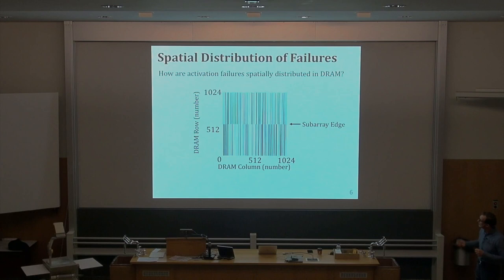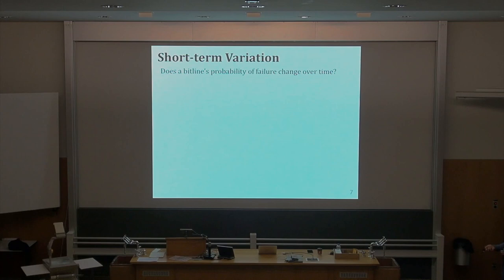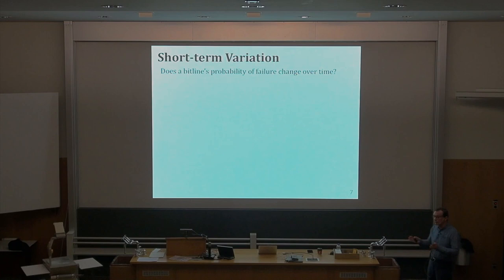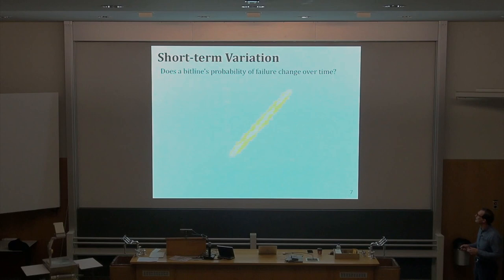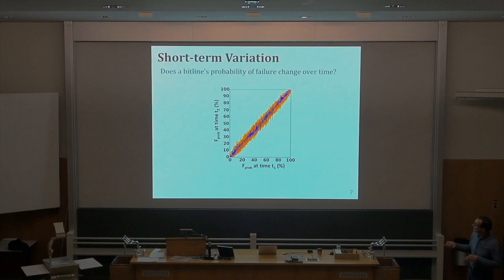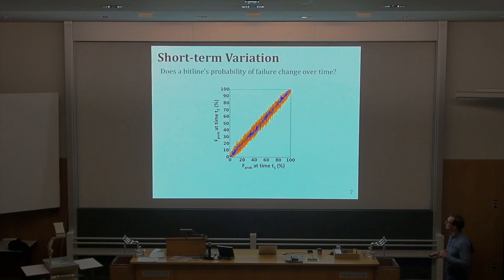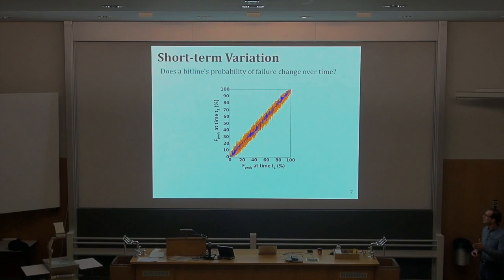Activation failures are highly constrained to local bit lines. The second question was: if you figure out that you can operate some bit line at lower latency, does this stay the same for some amount of time — maybe 90 days or a few months? One study looks at the failure probability of a bit line at time t1 and at time t2. It turns out the failure probability is very much correlated — if a bit line operates without errors at a low latency at t1, you won't get errors at t2. That's the key idea.